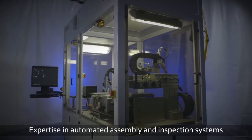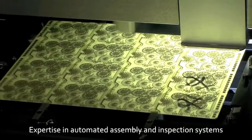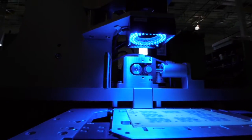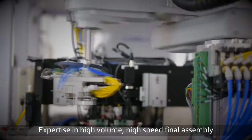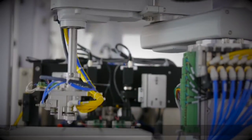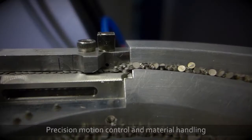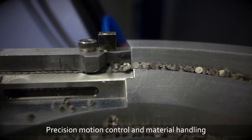We engineer to order precision inspection and assembly systems for advanced manufacturing. Our high-volume, high-speed assembly equipment uses advanced robotics, precision motion control, and material handling to routinely achieve accuracies of 50 microns or better, dispensing speeds of up to 10 milliliters per second.